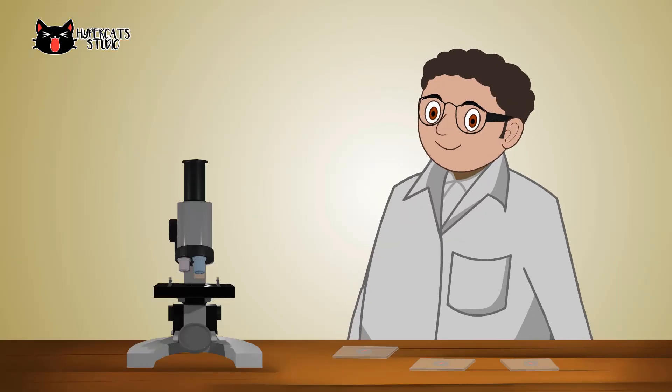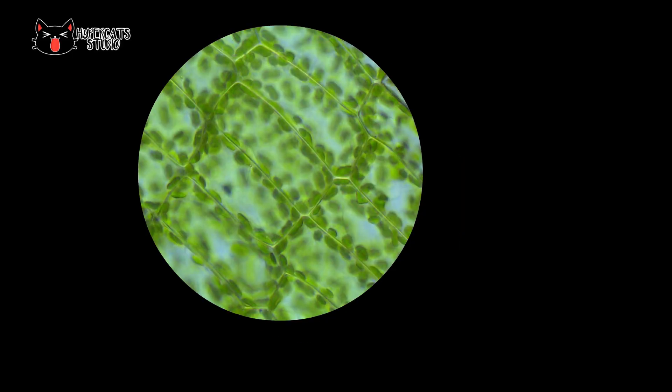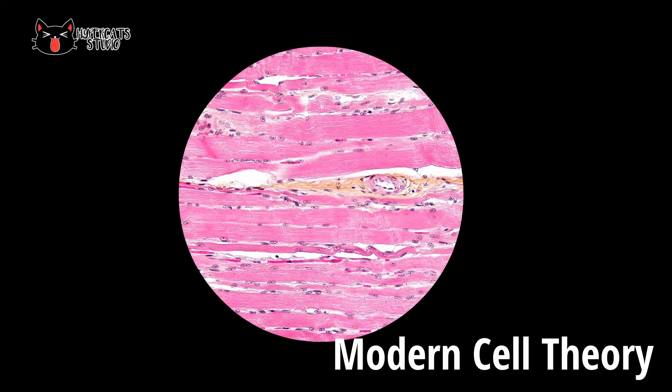Since then, technology evolved that allows scientists to have a broader and more detailed observation, which led to modern cell theory. Modern cell theory has three main additions to the classical cell theory.